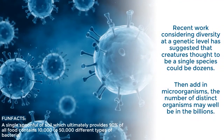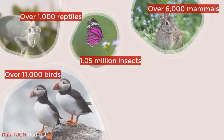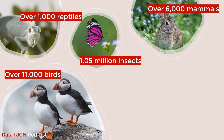Recent work considering diversity at a genetic level has suggested that creatures thought to be a single species could in some cases actually be dozens. Then add in bacteria and viruses, and the number of distinct organisms may well be in the billions. Fun fact: a single spoonful of soil, which ultimately provides 90% of all food, contains 10,000 to 50,000 different types of bacteria. The IUCN Red List tracks described species annually; in 2020 it listed species including 1.05 million insects, over 11,000 birds, over 11,000 reptiles, and over 6,000 mammals.